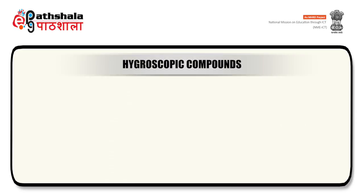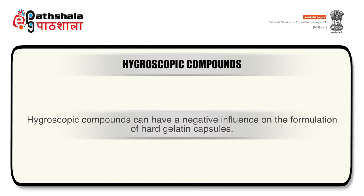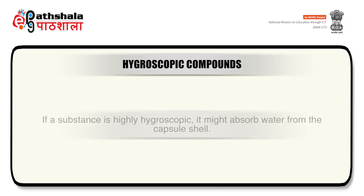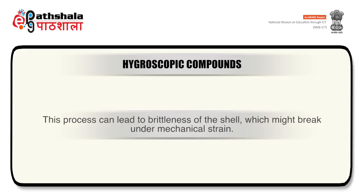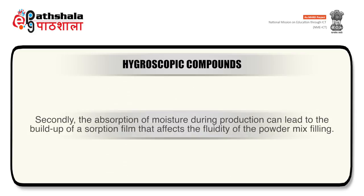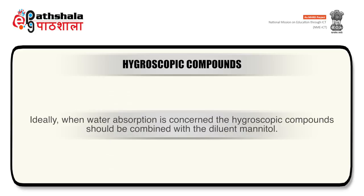USP24 proposes that pepsin and pancreatin can be added in dissolution tests to establish likely in vivo dissolution properties. Only when enzymes are added and the test still shows poor dissolution should a negative effect due to crosslinking be assumed. Hygroscopic compounds can negatively influence hard gelatin capsule formulations — if highly hygroscopic, they might absorb water from the capsule shell, leading to brittleness. Additionally, moisture absorption during production can build up a sorption film affecting powder fluidity. Ideally, when water absorption is a concern, the hygroscopic compound should be combined with the diluent mannitol.